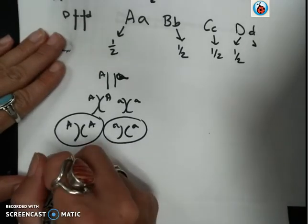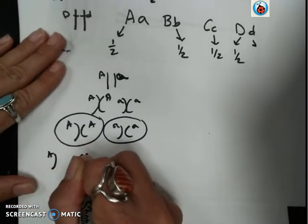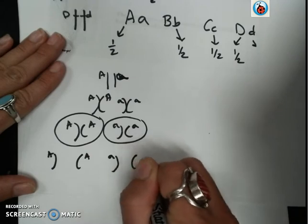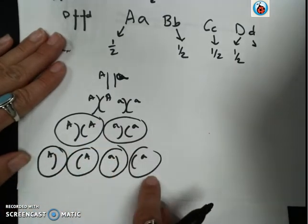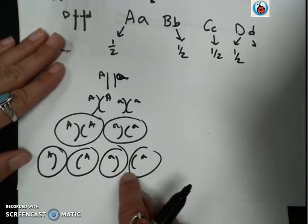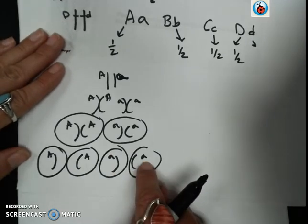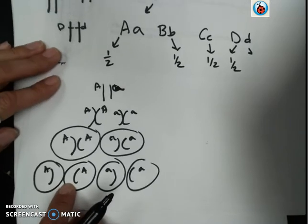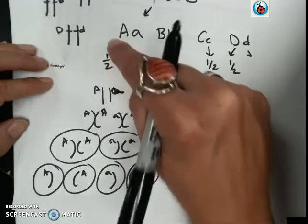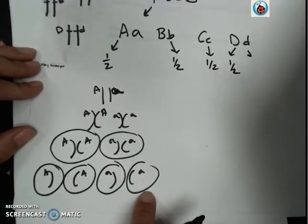Then in meiosis II, these sister chromatids would separate. So you can see that half the gametes inherit the sister chromatid that is now a daughter chromosome with the recessive allele. And half of them inherit the dominant allele. So up here when I am saying there is a one half chance of inheriting the dominant allele, this is what I am talking about.